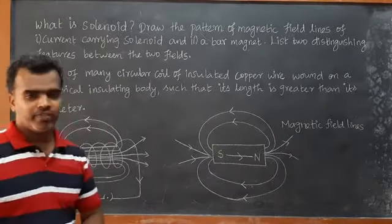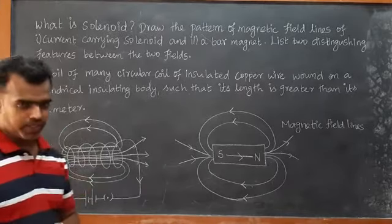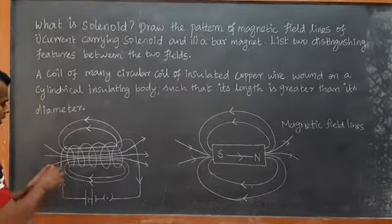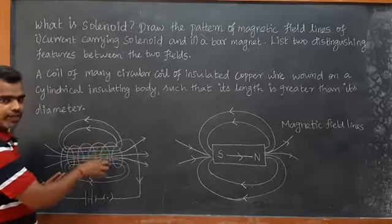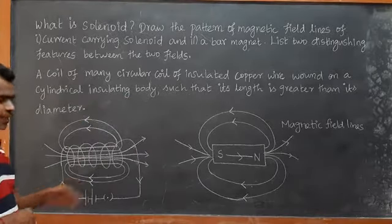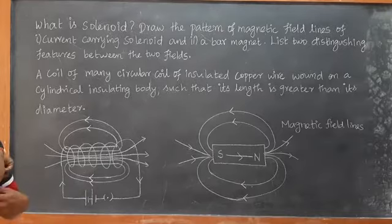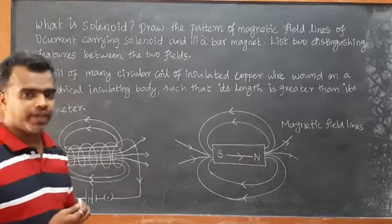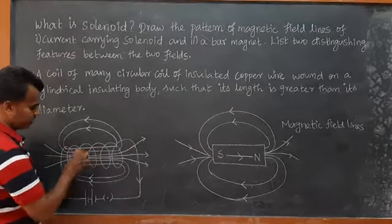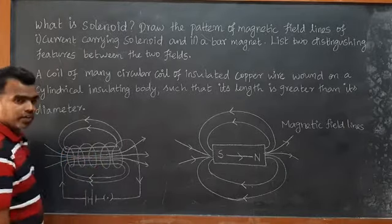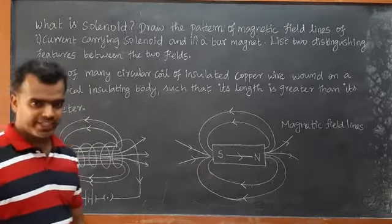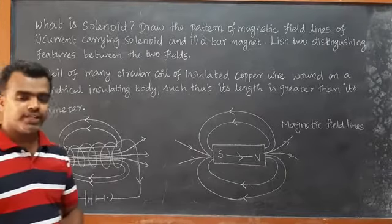Now we draw the pattern of magnetic field lines for a current carrying solenoid and a bar magnet. In the solenoid, there are n number of turns wound on a cylindrical insulating body. When current is passed through the solenoid, the magnetic field inside is uniform — meaning all field lines are parallel to each other inside the solenoid.